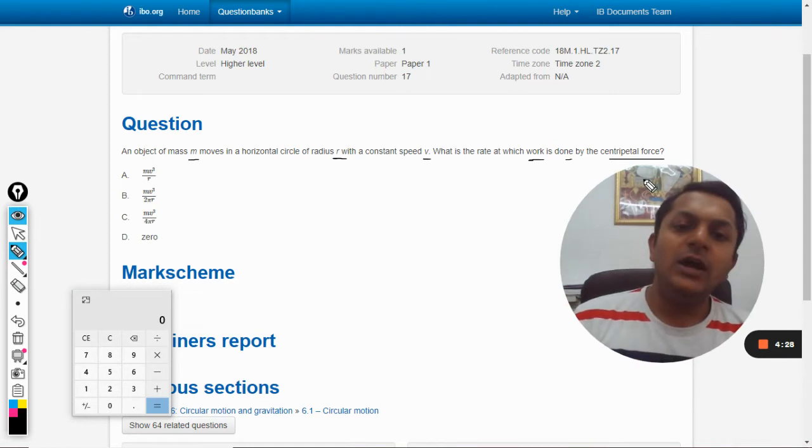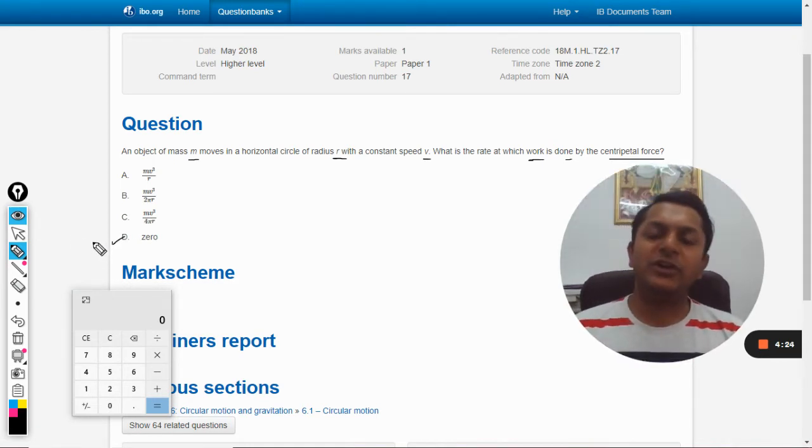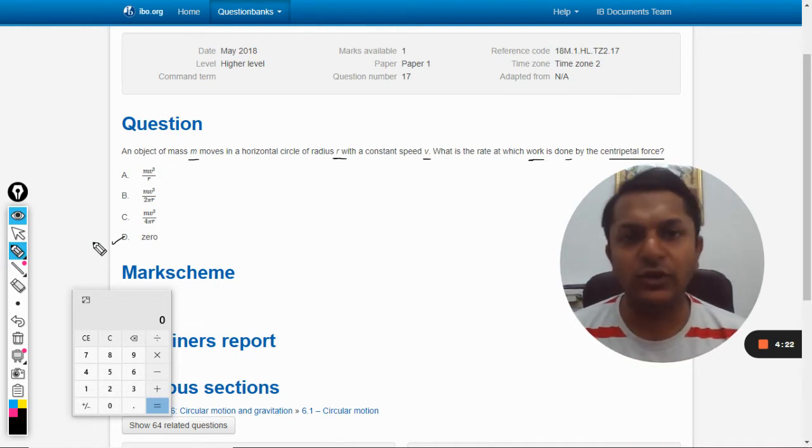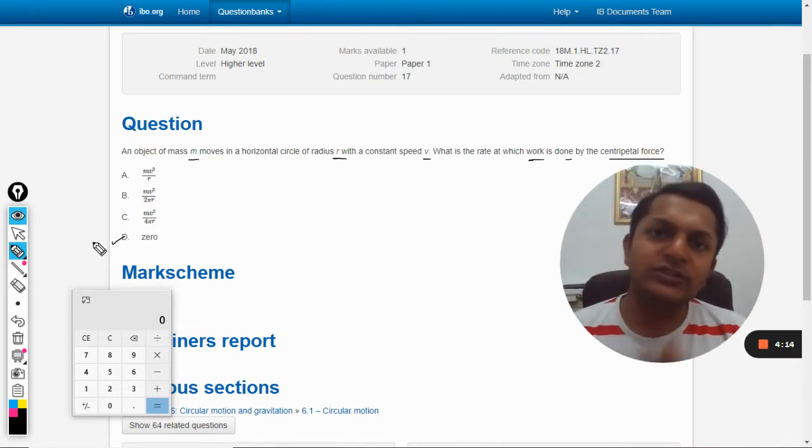Now why will the answer be zero? Because in circular motion we know that the work done by centripetal force is always zero. Why is it zero? Because centripetal force is a force that is acting towards the center. It is radial.